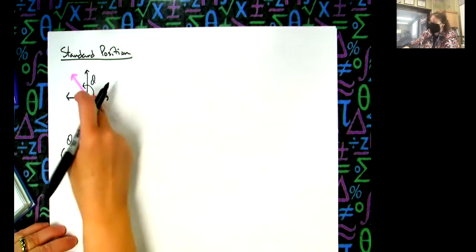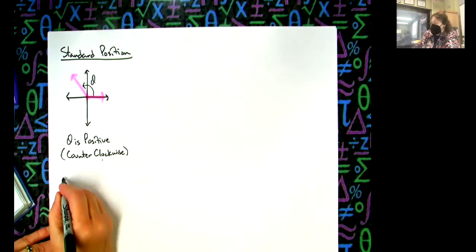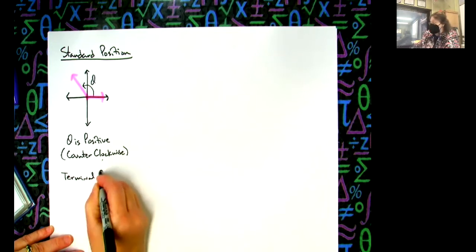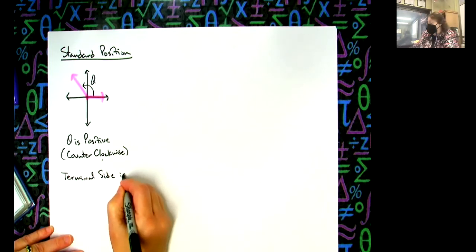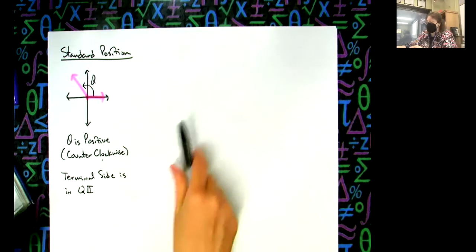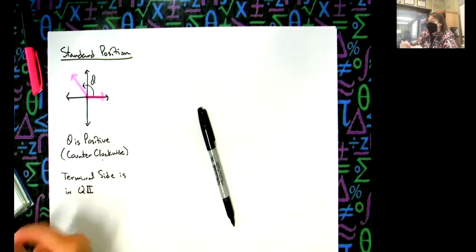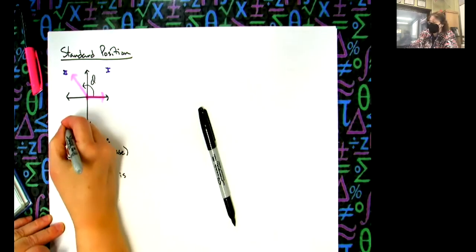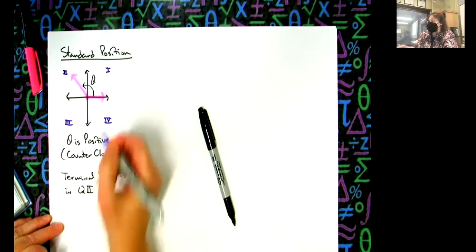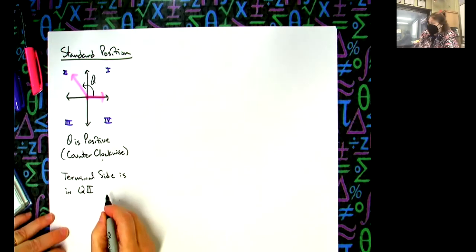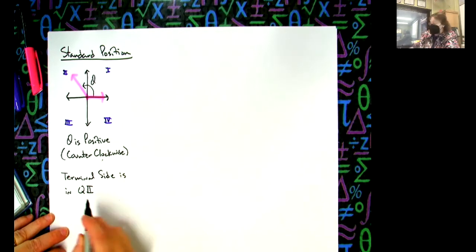If I was going to talk about this angle, I would say that the terminal side is in quadrant two, and I would use Roman numerals. We have quadrant one, quadrant two, quadrant three, and quadrant four from our coordinate plane. Since the terminal side is in quadrant two...